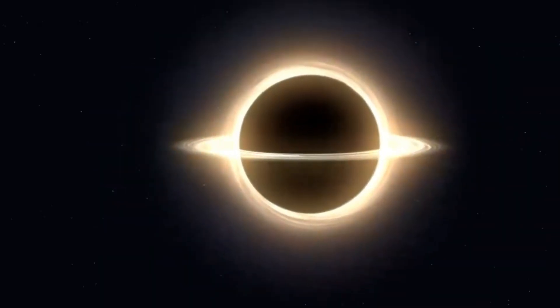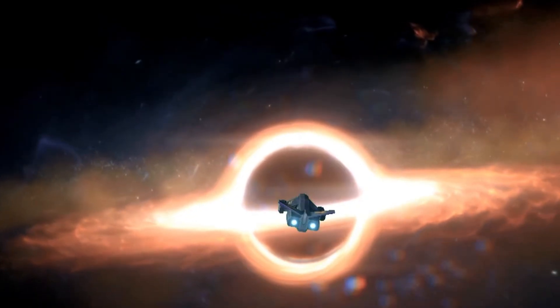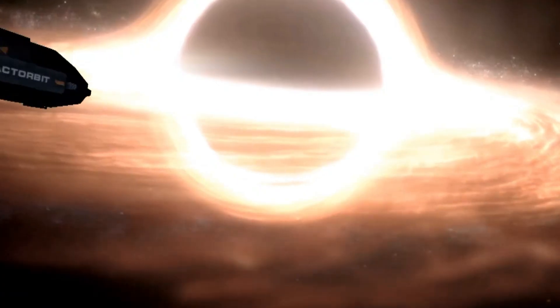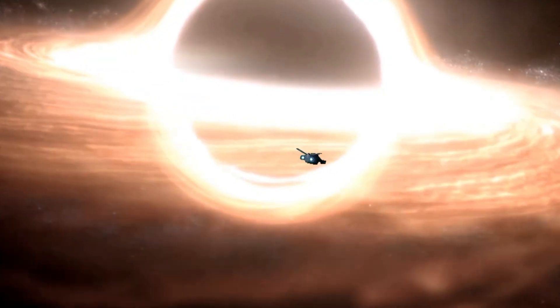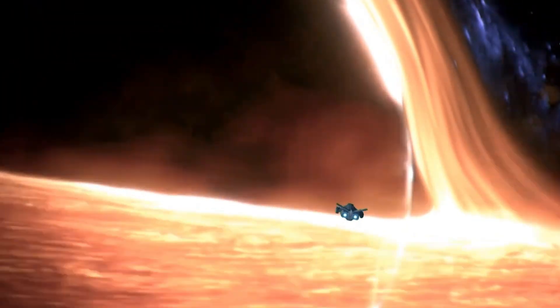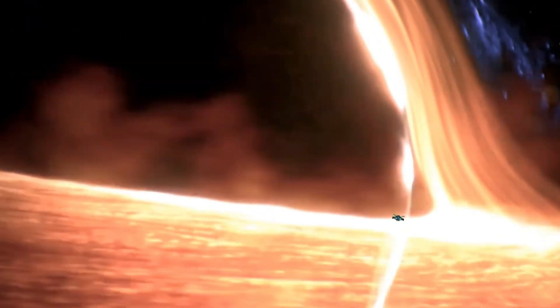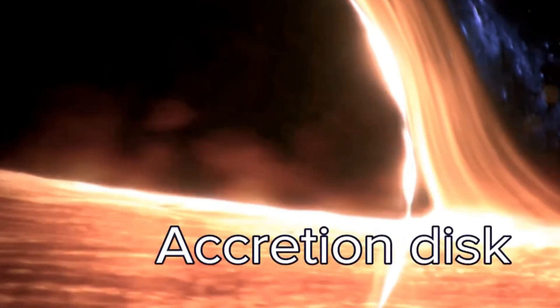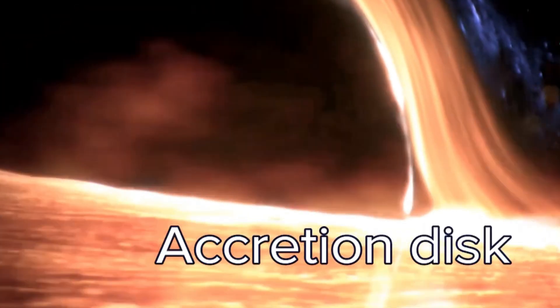It reaches a rapidly spinning ring of light and matter. This is the accretion disk of the black hole. The black hole's gravity is trying to suck it all in, but something else, a force, is stopping it. Our spacecraft slowly joins this swirling mass and begins rotating with it.